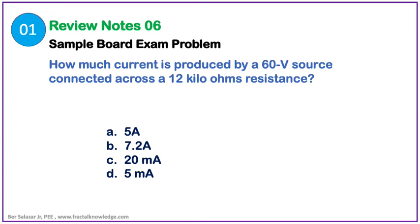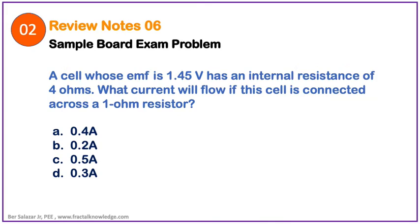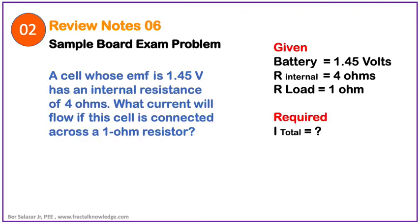Our second problem reads like this: A cell whose electromotive force is 1.45V has an internal resistance of 4 ohms. What current will flow if this cell is connected across a 1 ohm resistor? What was given is the voltage of the cell, which is 1.45V, with an internal resistance of 4 ohms and a load of 1 ohm connected across the battery cell. What was asked is the flow of current across the 1 ohm resistor.